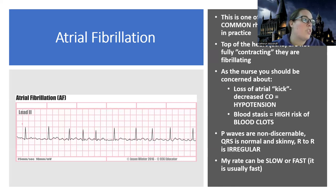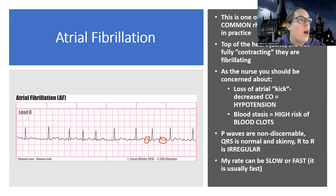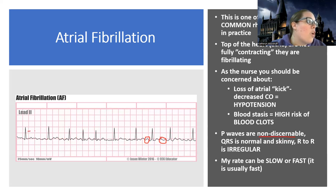Now let's talk about what this rhythm looks like. Using our systematic method, the first thing we do is look for P waves — but can you see a discernible P wave here? It looks like a squiggly line. These P waves are non-discernible — you can't tell. The other thing you're going to notice is the R-to-R spacing. So far we've talked about equal spacing, but look — there's a different amount of space here, then less space between these two QRSs, and now it's getting longer. So it's irregular.